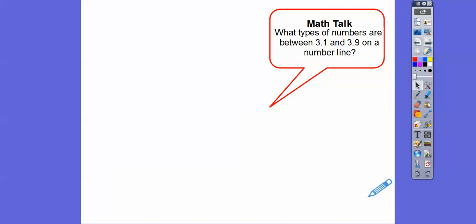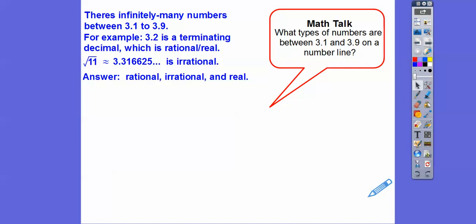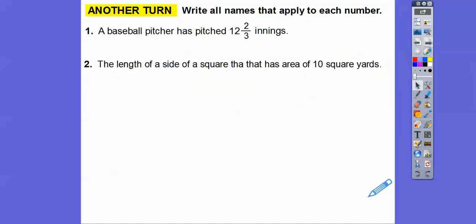So what types of numbers are between 3.1 and 3.9 on a number line? All kinds of numbers — there are infinitely many numbers between 3.1 and 3.9. For example, 3.2 is a terminating decimal, which means it's rational and real. But the square root of 11 — which is 3.31666 and so on — is also between 3.1 and 3.9, so that's an irrational number. The answer is rational and irrational and real. There are no whole numbers in between 3.1 and 3.9.